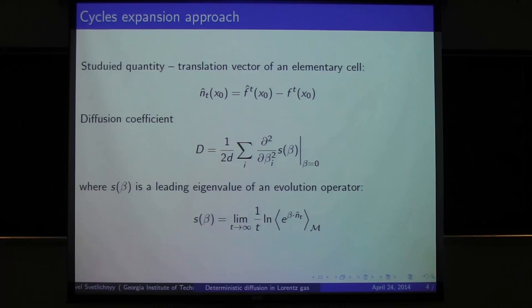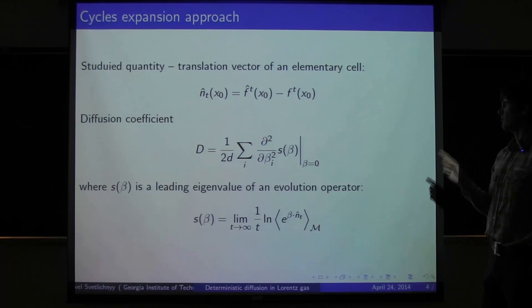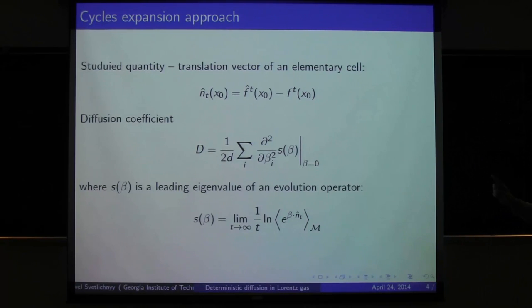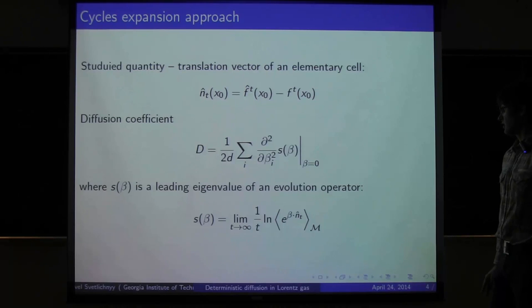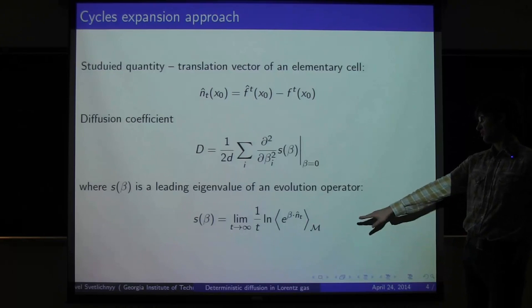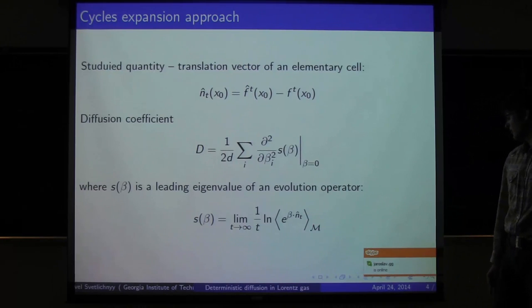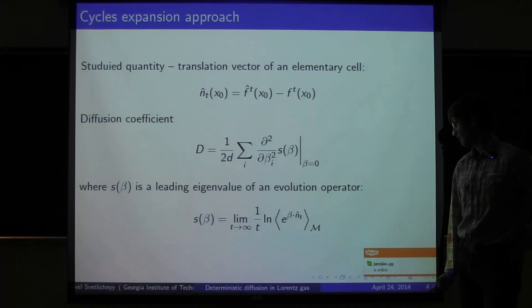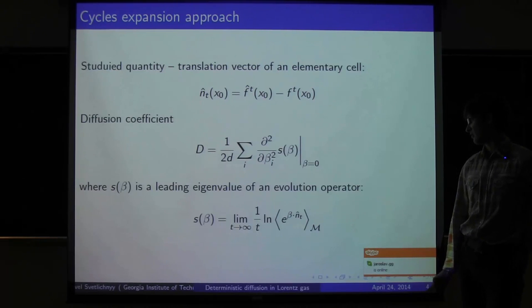To study the diffusion, we just have to look at this quantity, which is a translation vector between elementary cells in which the particle is at some moment of time t. For this quantity, we can write an evolution operator and we can look at its leading eigenvalue.